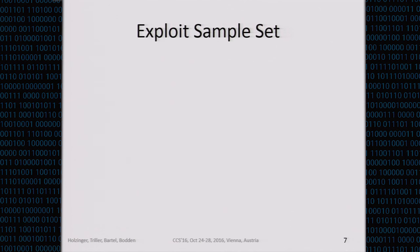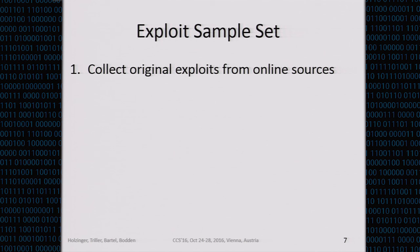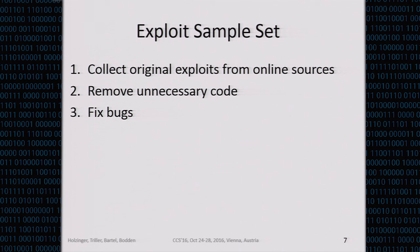Let's start with the first step: collect a sample set of exploits. We did a web search to find original exploits from various online sources. We then removed all unnecessary code — to a large extent this is proof-of-concept implementations, which means people include things like graphical user interfaces, payloads, and other code constructs not crucial to the actual attack. In very rare cases, we also had to fix bugs because exploits are implemented by people and people make mistakes. We then tried to reproduce attacks to make sure we were only analyzing exploits that we know did work for at least one version of Java in the past.